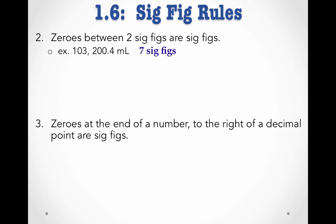Zeros at the end of a number to the right of a decimal point are also sig figs. For instance, 9.000 grams. These zeros are to the right of a decimal place at the end of the number. These zeros signify that we actually measured to that many decimal places, and each of those decimal places was a zero value. Therefore, this measurement has four sig figs.